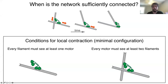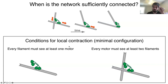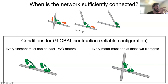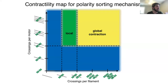For this system to work, every filament must see at least one motor, and every motor must see at least two filaments — but that is only a condition for local contraction. If you want to ensure global contraction, you require that every filament sees two motors, because then you can make a chain of contractile units connected to other contractile units and globally contract your system. This gives us a kind of ideal contractility map: with more than two crossings per motor you may contract; with one crossing per filament you contract locally; with two crossings per filament you contract globally.